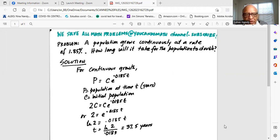So when the population doubles, P becomes 2C and that is equal to C times natural number E exponent 0.0185T. So C and C cancels from the left and right. So we are left with 2 equal to E, natural number raised to the power 0.0185T.